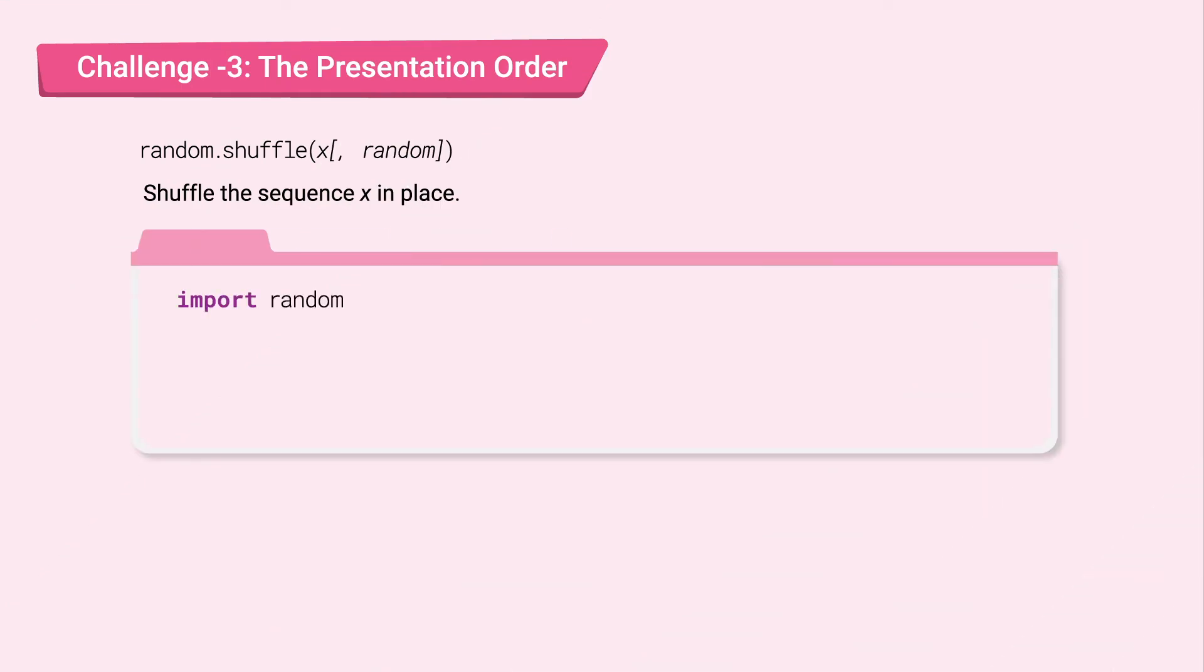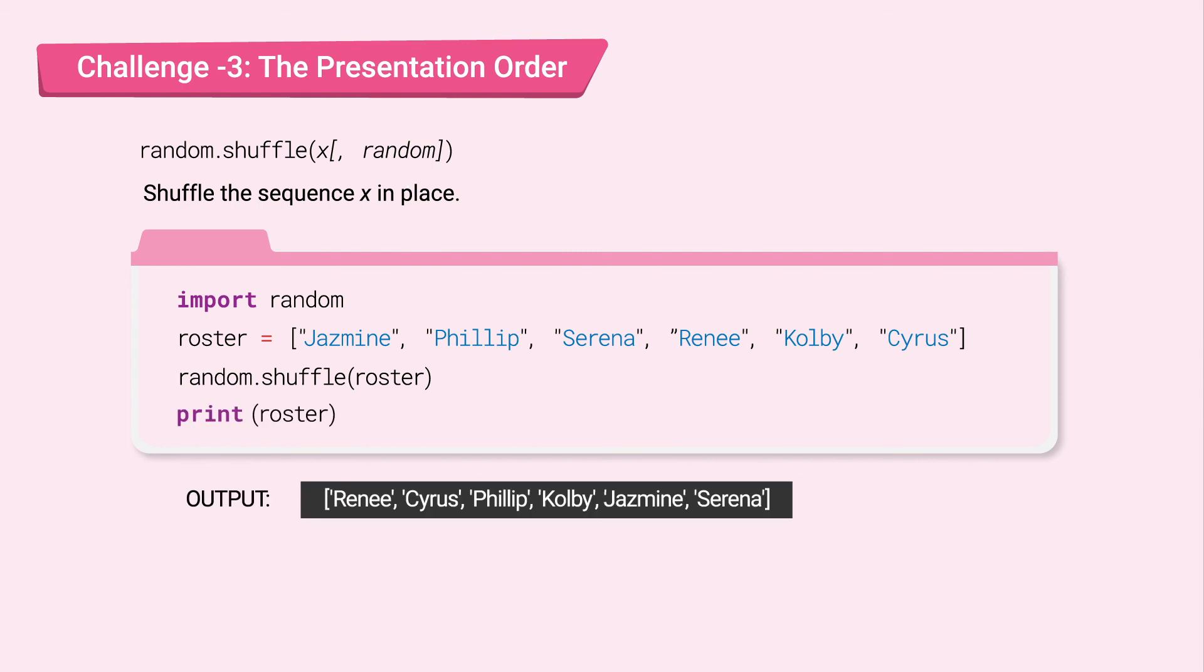Import random. Next, create a roster list. Let's shuffle the roster. Pass the roster to random.shuffle and print it. After executing this, the original list is altered. And it looks like Renee is presenting first.